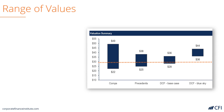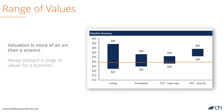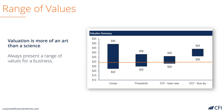Finally, putting it all together, it's important to show a range of values for a private company. Here, we've shown comparable companies, precedent transactions, and two different discounted cash flow models on a chart. It's important to highlight that valuation is more of an art than a science. Therefore, we always present a range of values for a business, since it's extremely hard to pinpoint one value when so many assumptions have to be made about the future. Hopefully, this has shed some light on private company valuation methods.